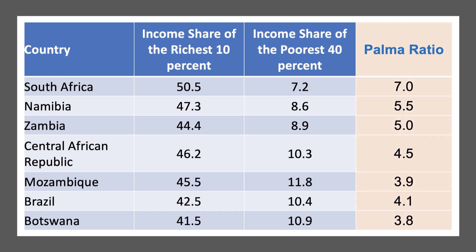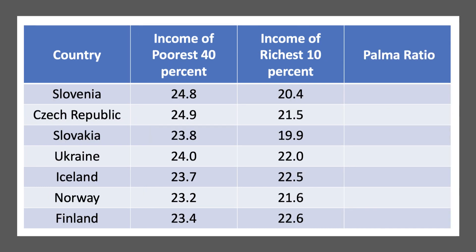Here are the numbers for these countries. In South Africa — and this is one of those great stats to have in your revision notes — the Palmer Ratio is 7. The richest 10% have 7 times the income of the bottom 40% of households. And in all of these cases, the Palmer Ratio is well above 3, in some cases above 5. In Brazil, for example, it's 4.1.